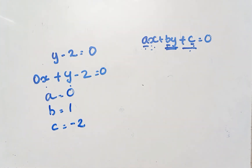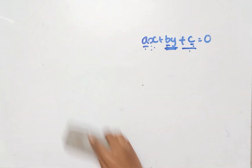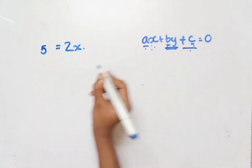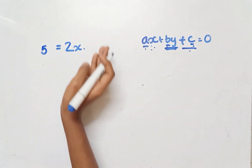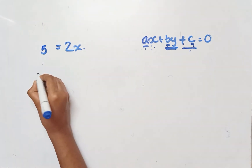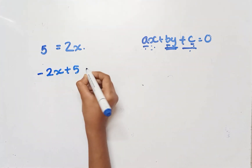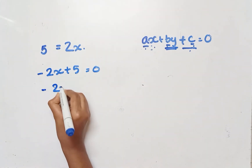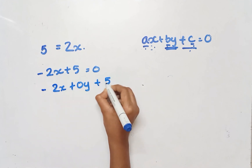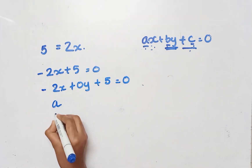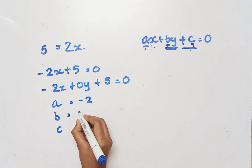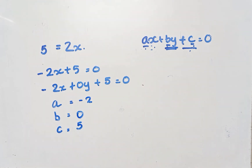Last and final question: 5 equals 2x. We rearrange: minus 2x plus 5 equals 0, written as minus 2x plus 0y plus 5 equals 0. So A equals negative 2, B equals 0, and C equals 5. That completes linear equations in 2 variables, Exercise 4.1.